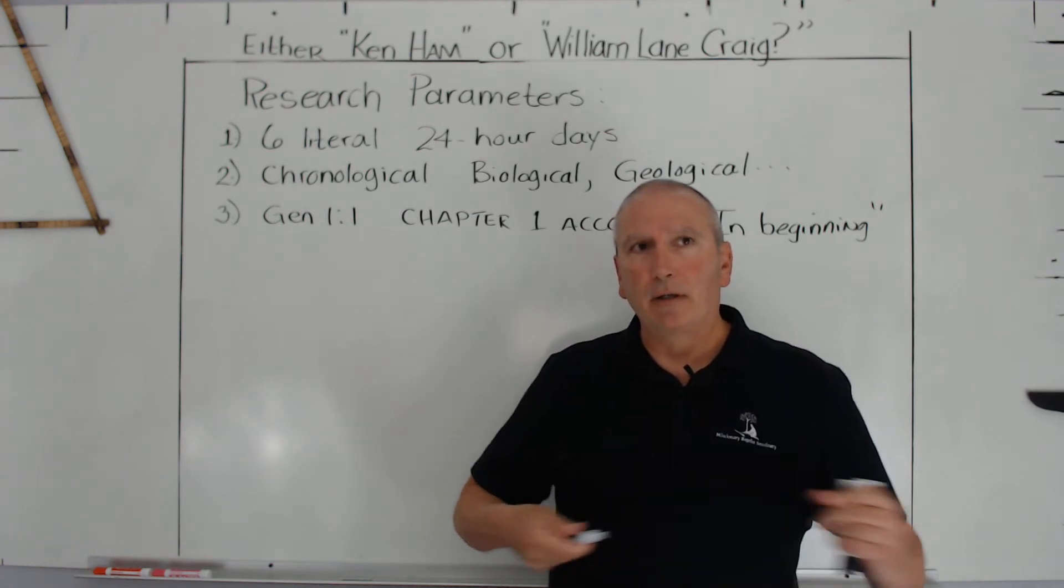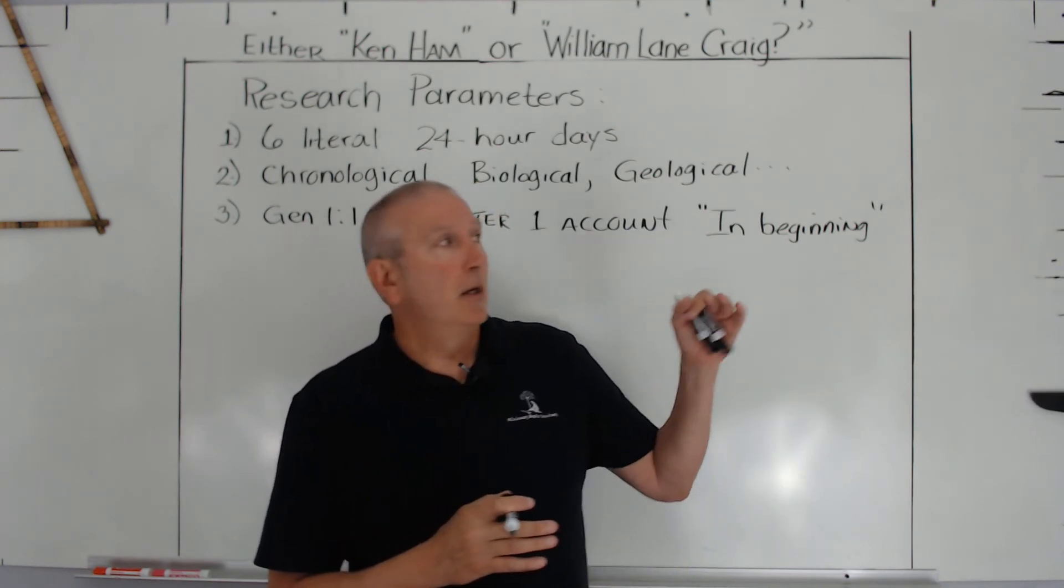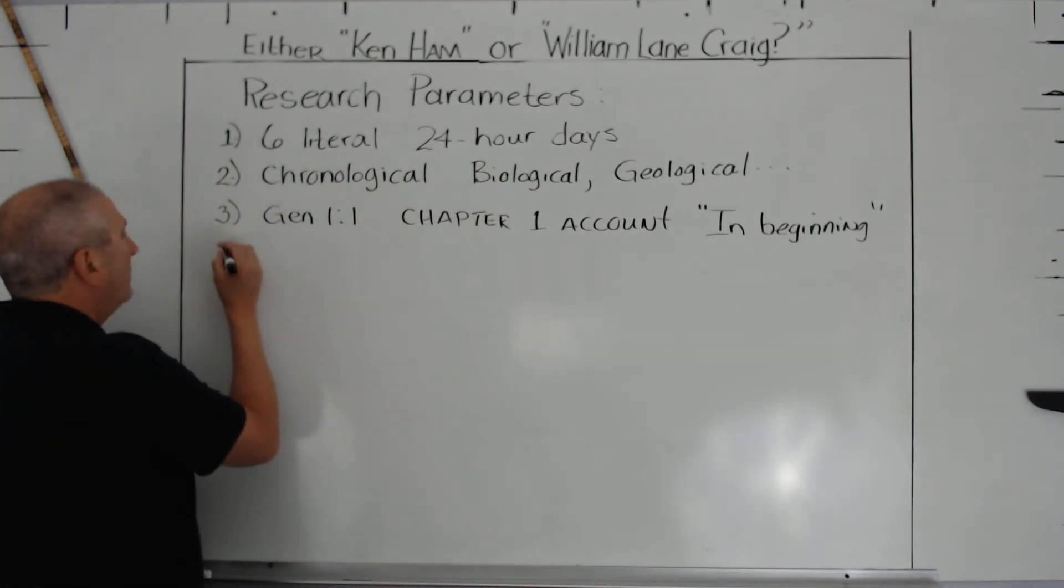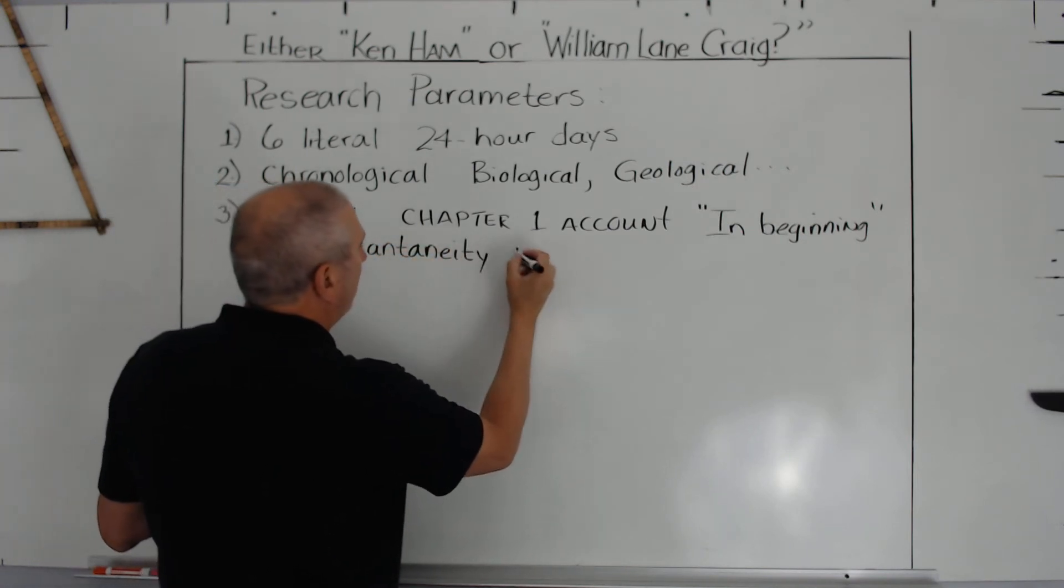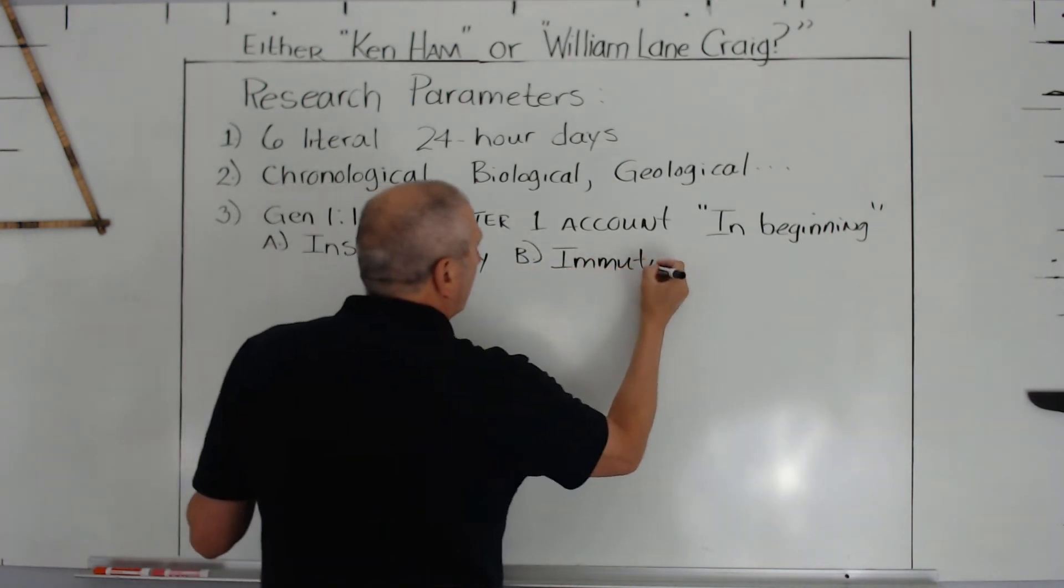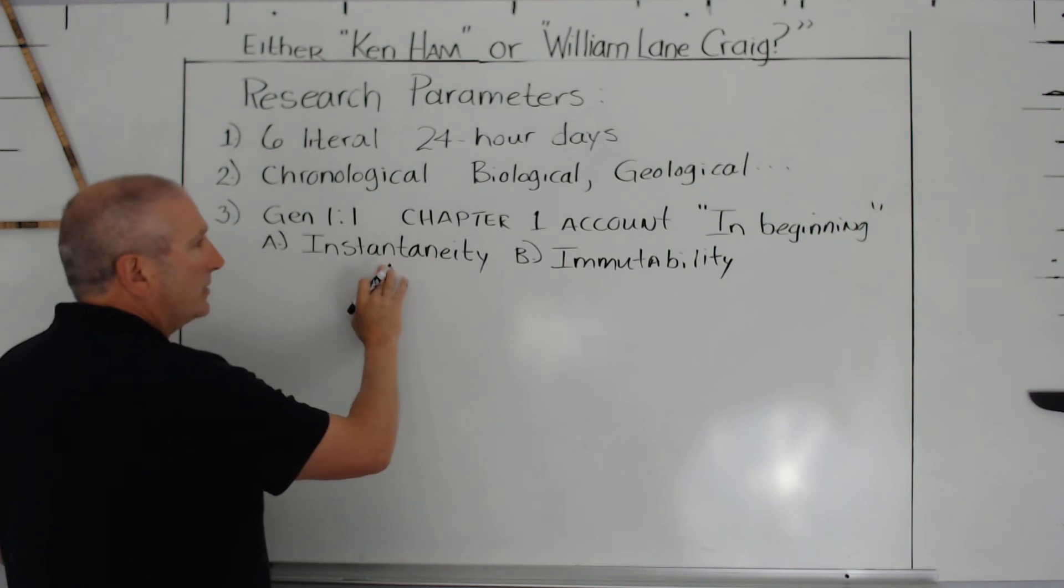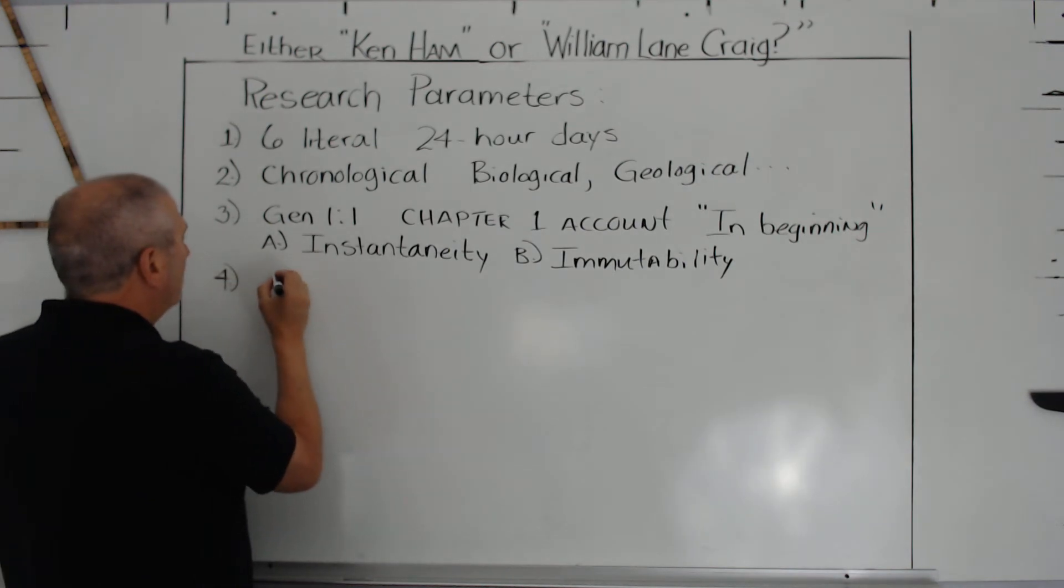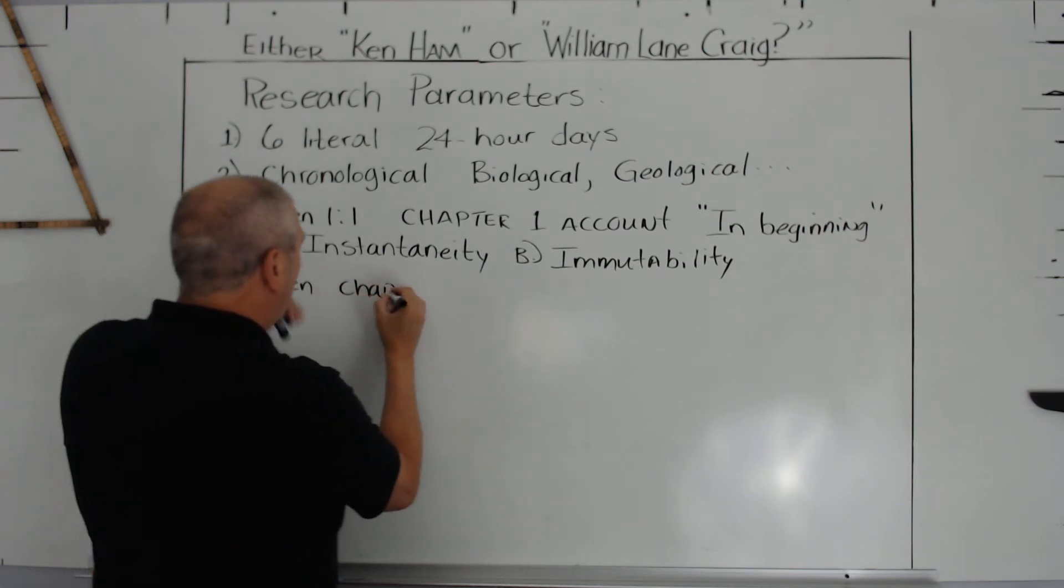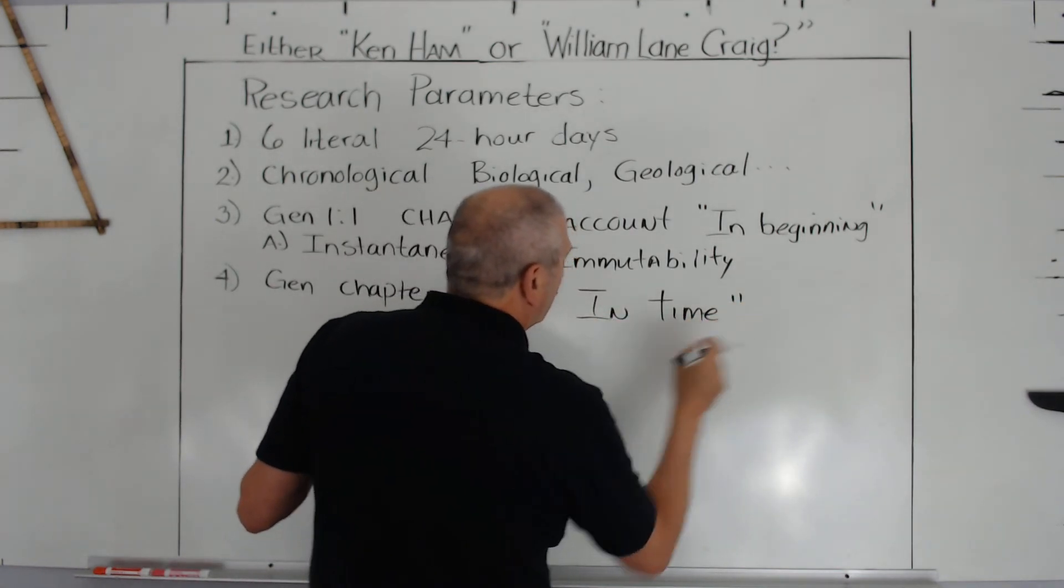We have also here under Genesis 1:1 a parameter: we have A, instantaneity, and B, the immutability of God. Immutability changes not, that's Malachi 3:6. Instantaneity, that's Isaiah 48:3. Now we have the Genesis 1:1 in beginning. We have another parameter: Genesis 2, chapter 2, the end time creation.